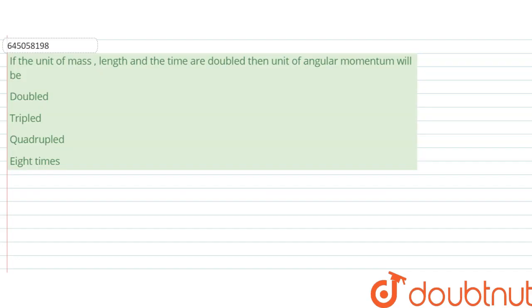Hello, we are given with the question and the question says that if the unit of mass, length, and time are doubled, then unit of angular momentum will be what? So what will happen to angular momentum?